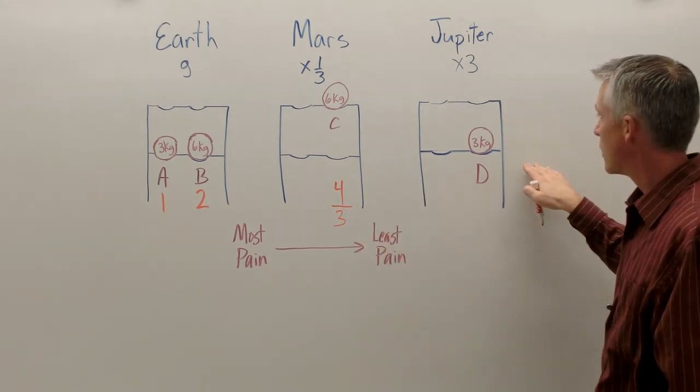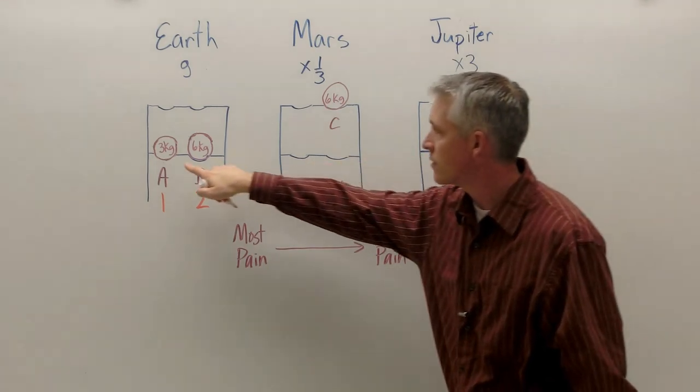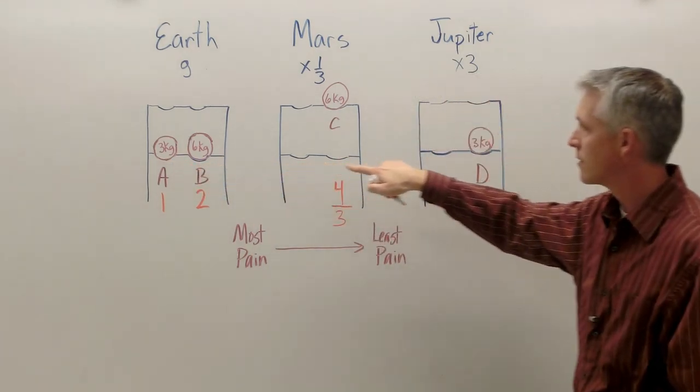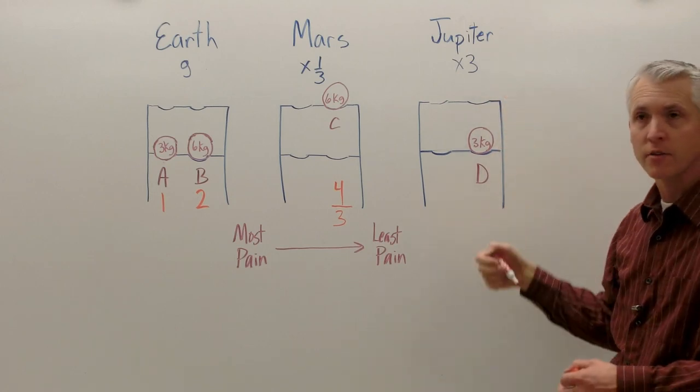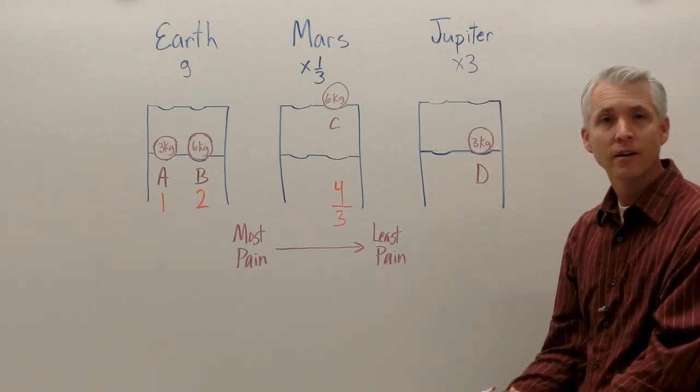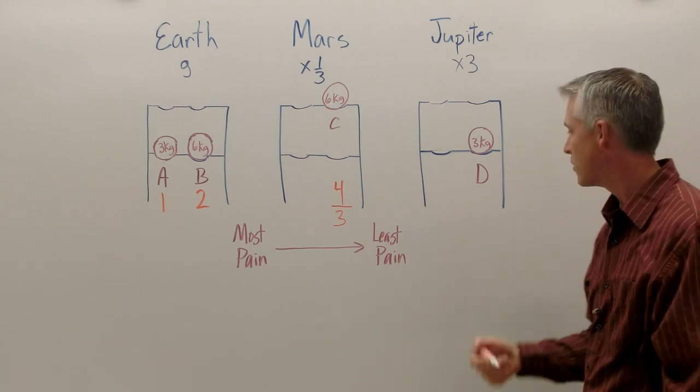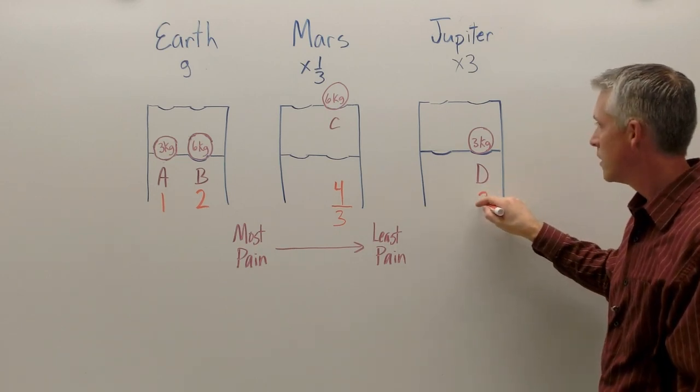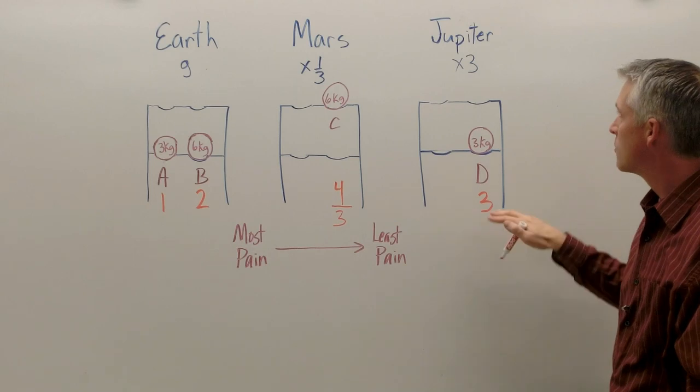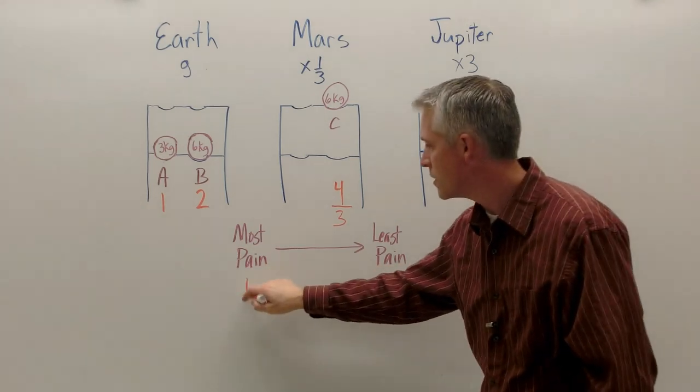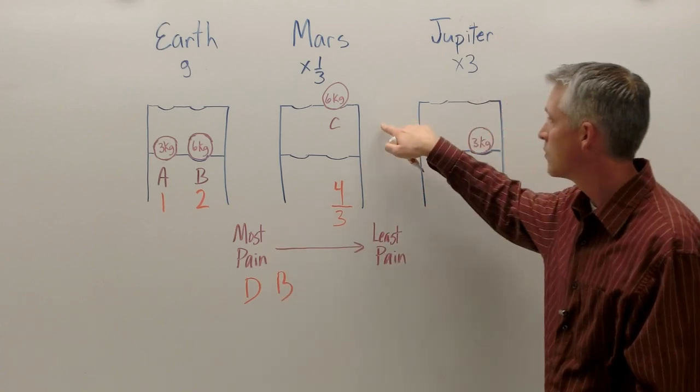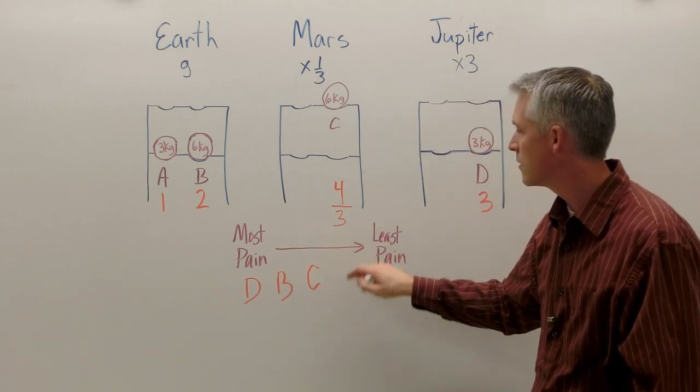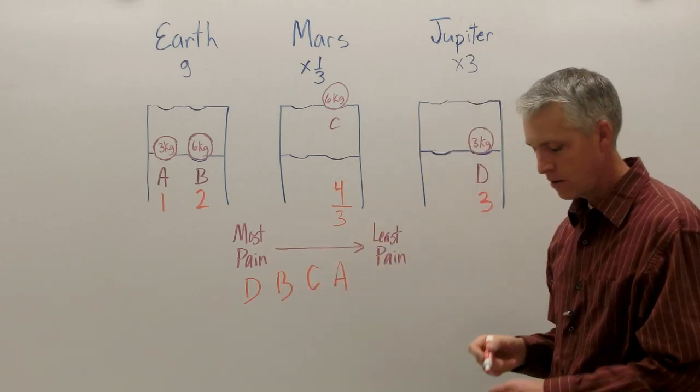And on Jupiter, this is going to have the same mass and height as A does, but because it's on Jupiter, it has three times gravity, so it'll have three times as much pain, three times as much pain when that falls down. So that would be a three. So the most pain in this case is going to be D, and then B would be second, followed by C on Mars, and then A would come in last.